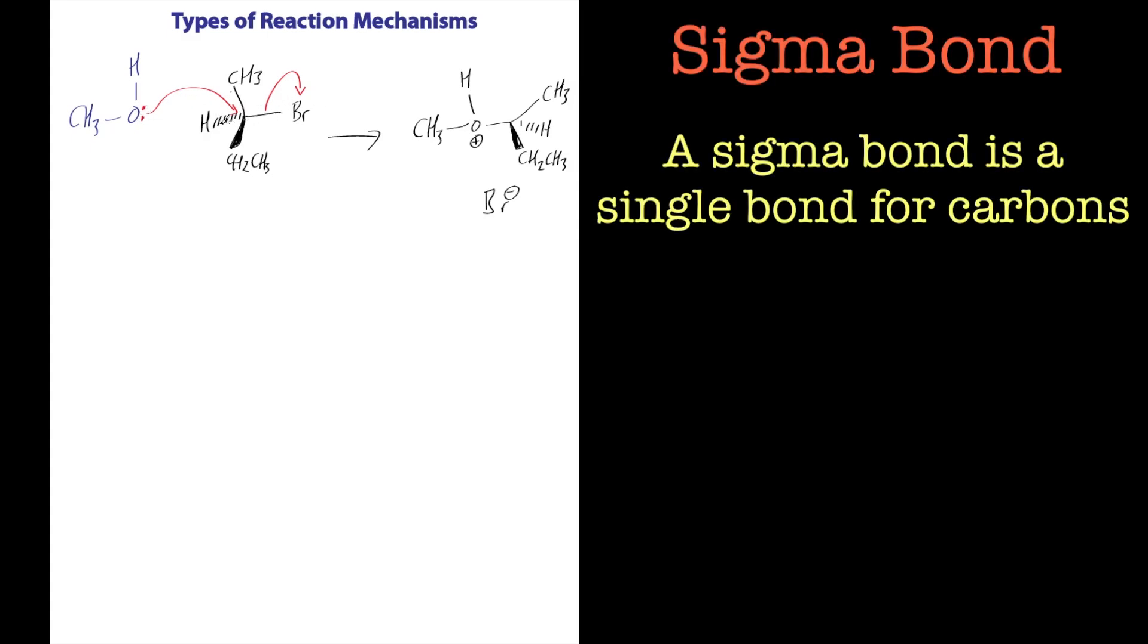So it attacks there. And don't worry too much if you don't know what a sigma bond is yet. Basically it attacks there, and this flips over, and this actually inverts its center. Now, if that happens, this is called an SN2 reaction.